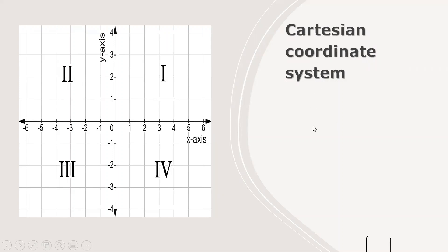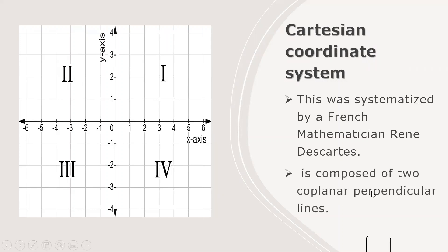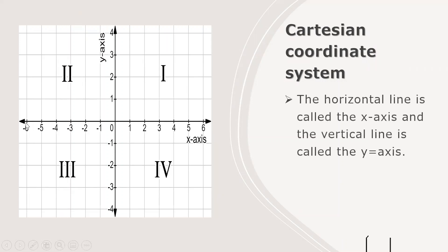Let's talk about the Cartesian coordinate system. This was systematized by a French mathematician, Rene Descartes. It is composed of two coplanar perpendicular lines. The horizontal line is what we call the x-axis and the vertical line is what we call the y-axis.